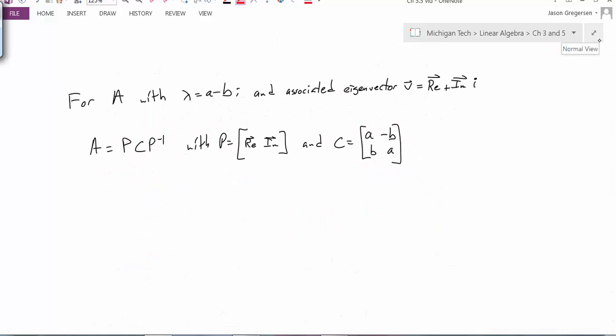So to summarize this, for A with lambda complex, which is equal to a minus bi, and the associated eigenvectors that also have real and imaginary parts,